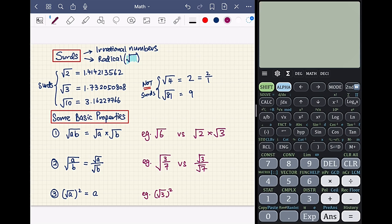Before we begin, let's talk about what surds actually are. Surds are irrational numbers written with a radical, and the symbol looks like this. Some examples of surds are square root 2, square root 3, and square root 10.